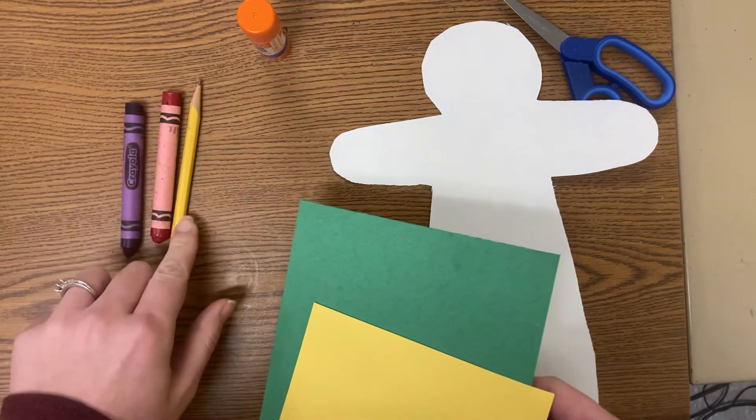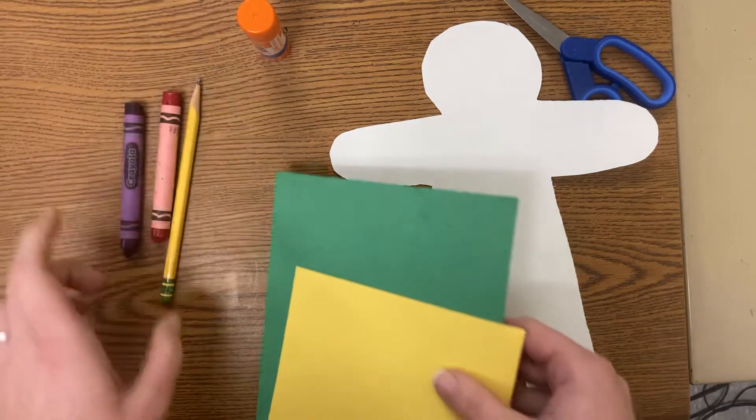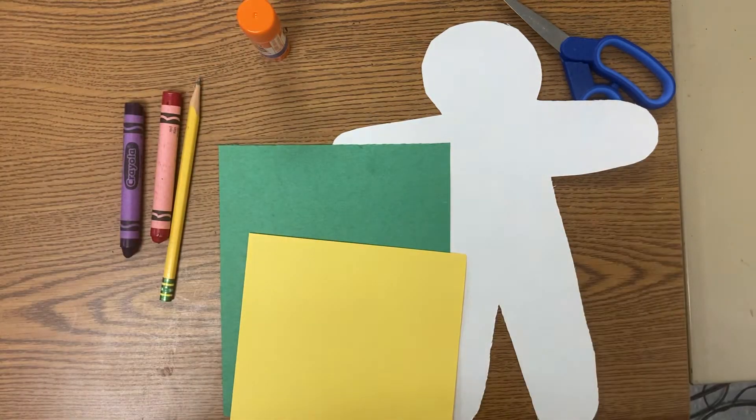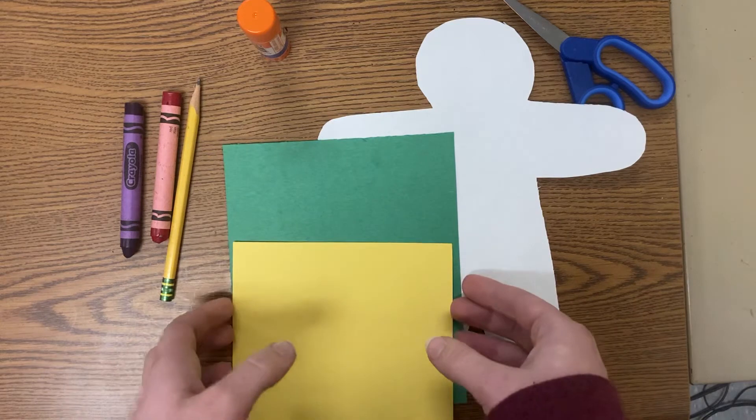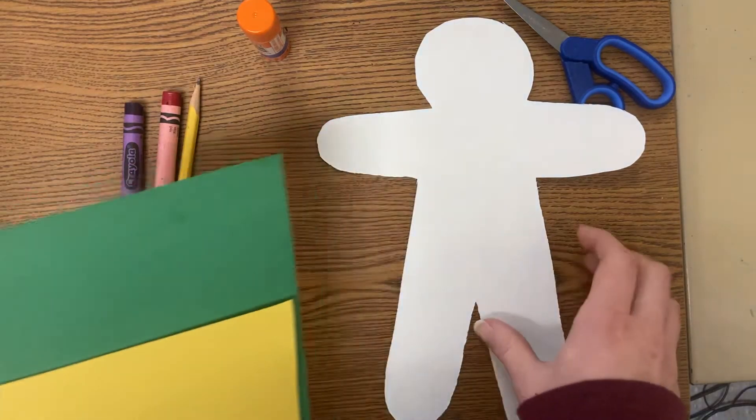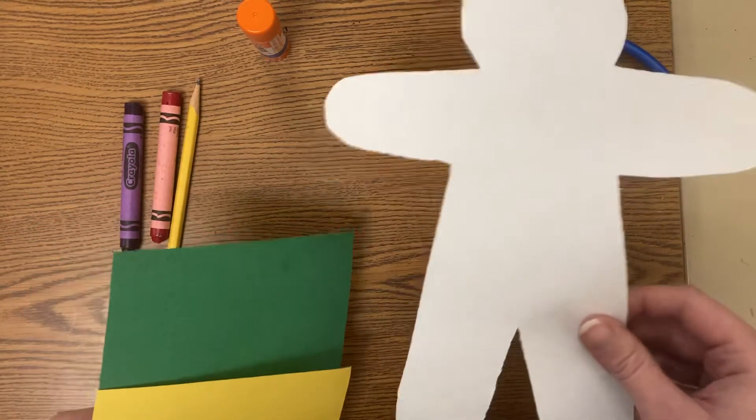You're going to need something to color with, a pencil, a glue stick, a pair of scissors, and then I'll have two pieces of construction paper and then I have this cut out figure or croquis that we're going to use to help get clothes on our person.